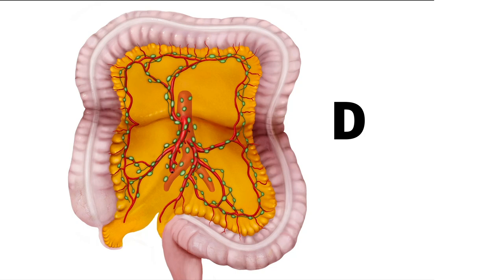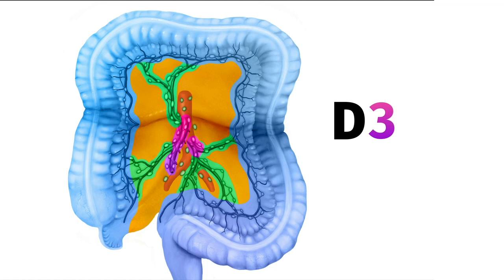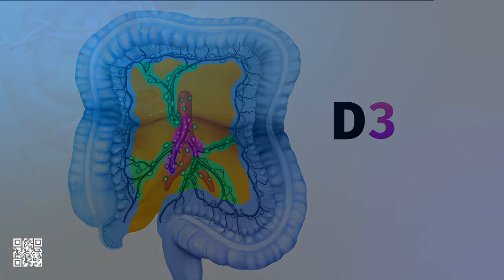D1 paracolic nodes run along the marginal artery. D2 intermediate nodes run with the tumour-supplying vessels, and D3 central nodes overlie the anterior aspect of the superior mesenteric vein, lateral to the superior mesenteric artery.